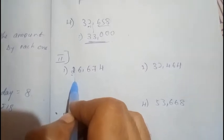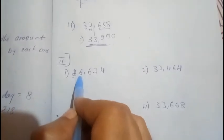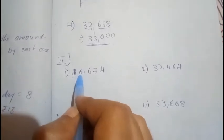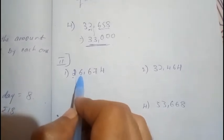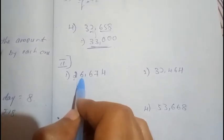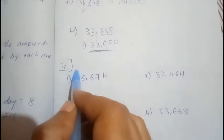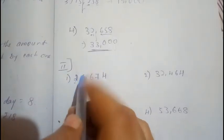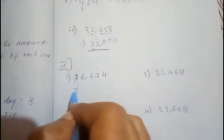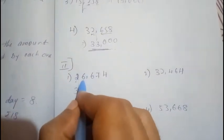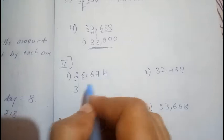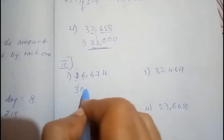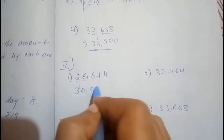For the first question, mark a line in your mind at the ten thousands place. The thousands digit is more than five, so add one: 1 plus 2 equals 3. Replace the remaining digits with zeros. Your answer is 30000.